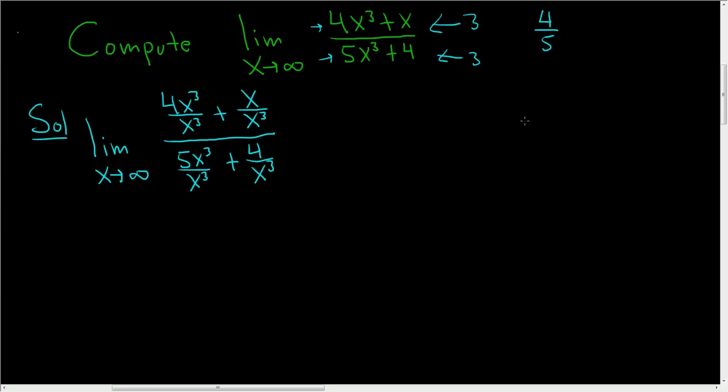And so why can you do that? That doesn't make any sense. Well, we skipped a lot of work here. If we look at what we started with, one way to think about it is to multiply by 1 over x cubed over 1 over x cubed. And then when you distribute 1 over x cubed, you get what we have here.